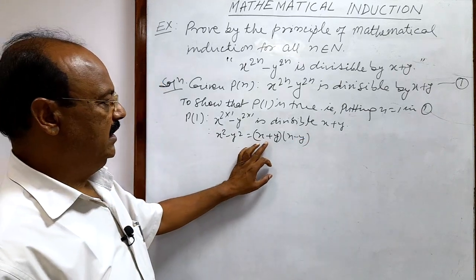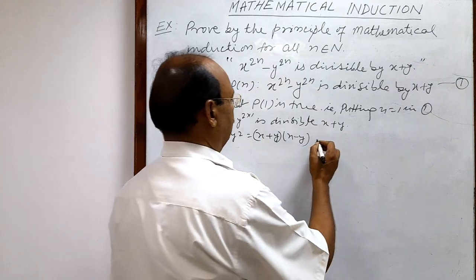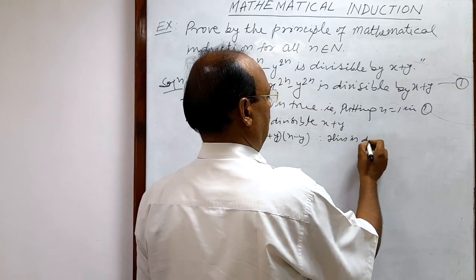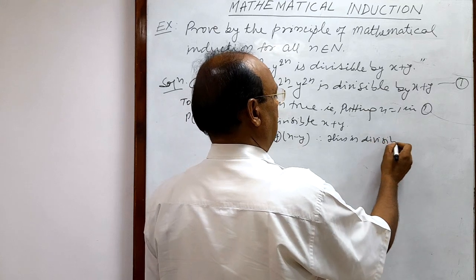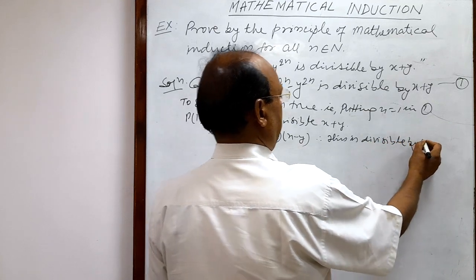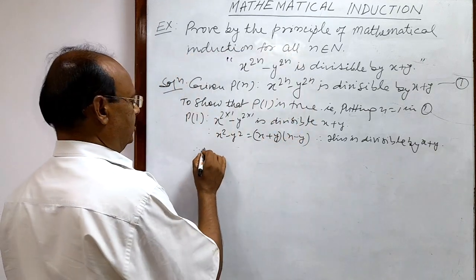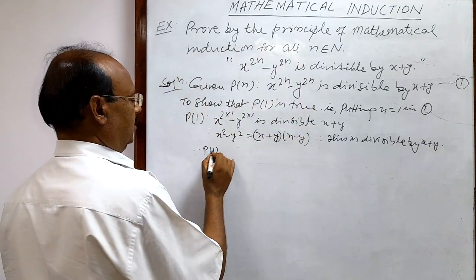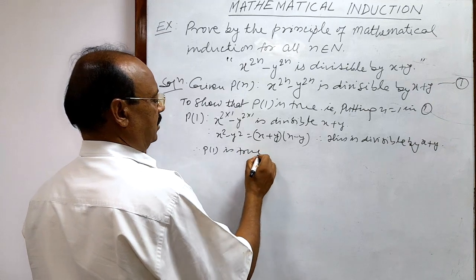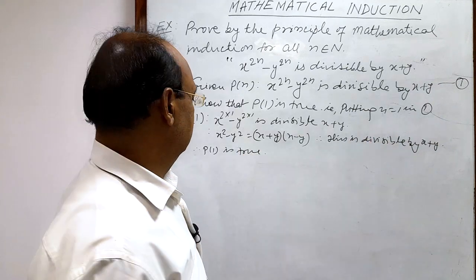x squared minus y squared can be written as x plus y times x minus y. Since x plus y is a factor, this is divisible by x plus y. Therefore P(1) is true.